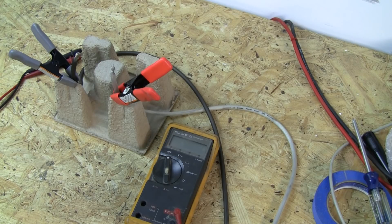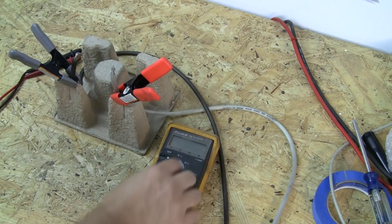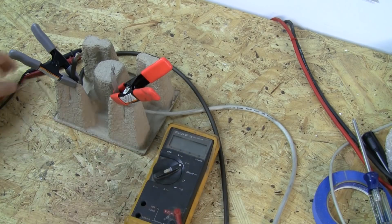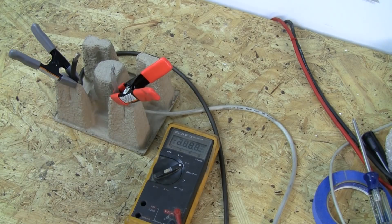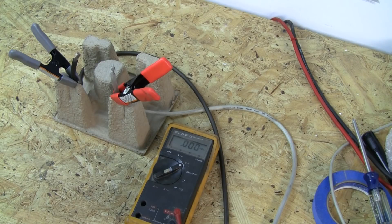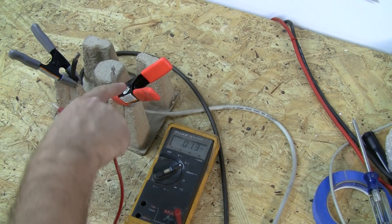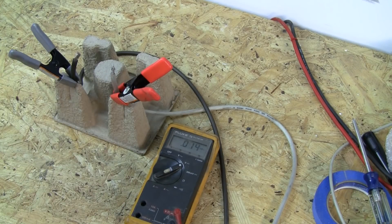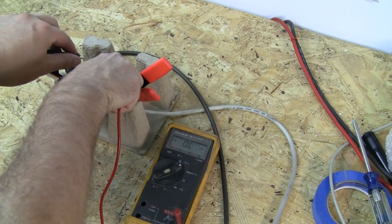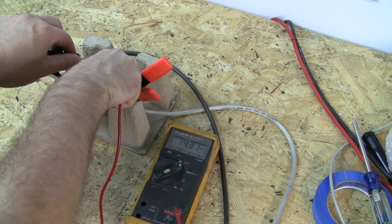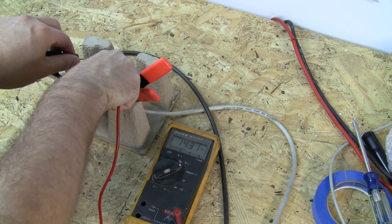First off we're going to do the DC voltage test. I've got a Fluke 75 that we're going to set to DC voltage. I have no idea how old this meter is, I inherited it, but it is pretty old. We have positive here and negative there, so this is our power and our ground. We're going to check voltage and we have 14.31 volts.